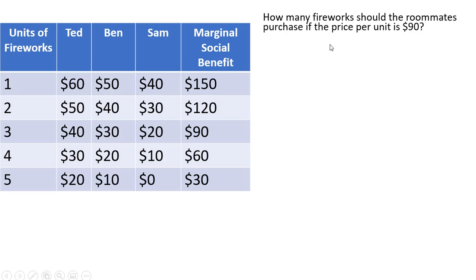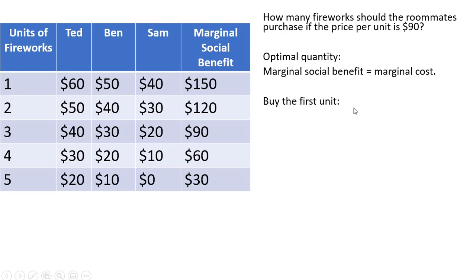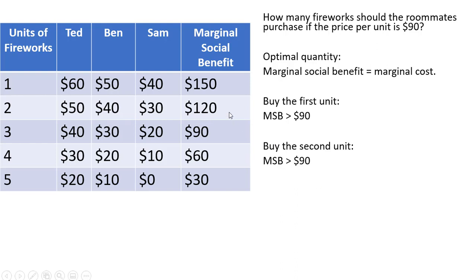How many fireworks should the roommates purchase if the price per unit is $90? The optimal quantity occurs where the marginal social benefit equals the marginal cost, in this case the price of $90. Should they buy the first unit? Yes, the marginal social benefit of $150 exceeds the marginal cost of $90. Should they buy the second unit? Yes, collectively the roommates receive a marginal social benefit of $120, which exceeds the marginal cost. Should they buy the third unit? Yes, because the marginal social benefit just equals the marginal cost of $90.